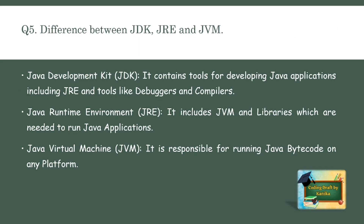The next question is: what is the difference between JDK, JRE, and JVM? JDK, which is the Java Development Kit, contains tools for developing Java applications including JRE and tools like debuggers and compilers. JRE, the Java Runtime Environment, includes JVM and libraries needed to run Java applications. JVM, the Java Virtual Machine, is responsible for running Java bytecode on multiple platforms.